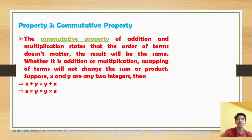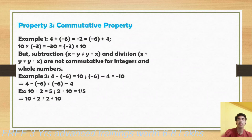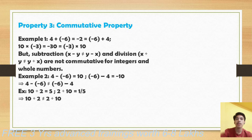The next property is commutative property. Commutative property of addition and multiplication states that the order of terms does not matter — the result will be the same. If we have x and y, then x plus y is the same as y plus x. Similarly, x times y is the same as y times x. For example, 4 plus minus 6 equals minus 6 plus 4, both giving minus 2. But subtraction and division operations do not follow commutative property — for example, 4 minus 6 is not equal to 6 minus 4.